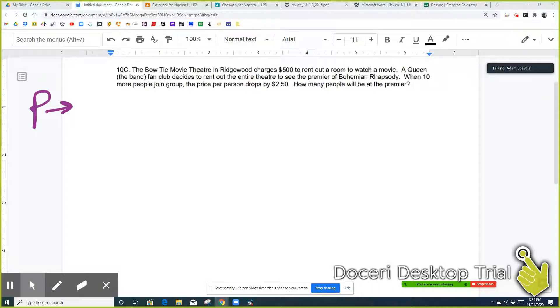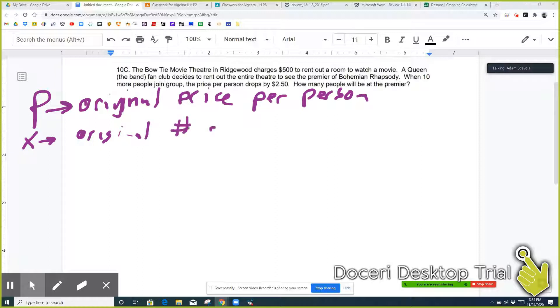We don't know P, which I'm going to refer to as the original price per person. And X is going to be the original number of people.